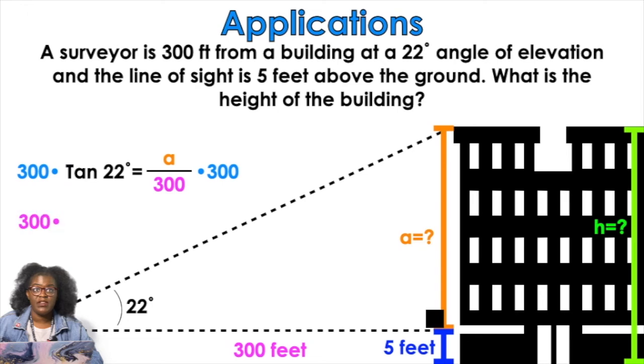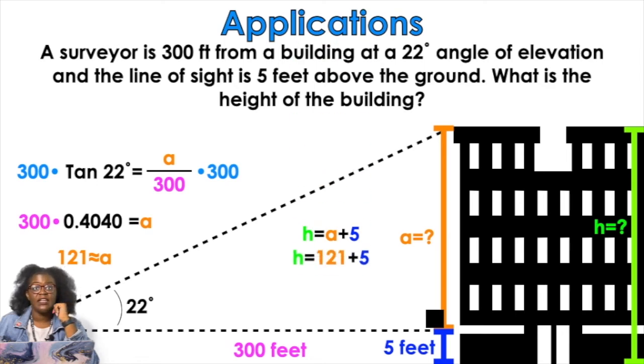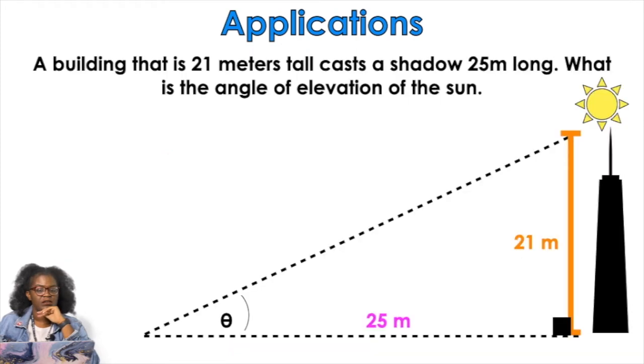300 times tan of 22. In your calculator, you found tan of 22. And that was 0.4040 equals A. Multiply those two things, round to the nearest, what are we doing, feet? Yeah, round to the nearest foot, 121. Now, that was A. Remember, I need the height of the building. The height of the building is going to be A plus five because the five feet from where her eyesight is. Right? So that's 121 plus five. Final answer, height of the building, 126 feet.